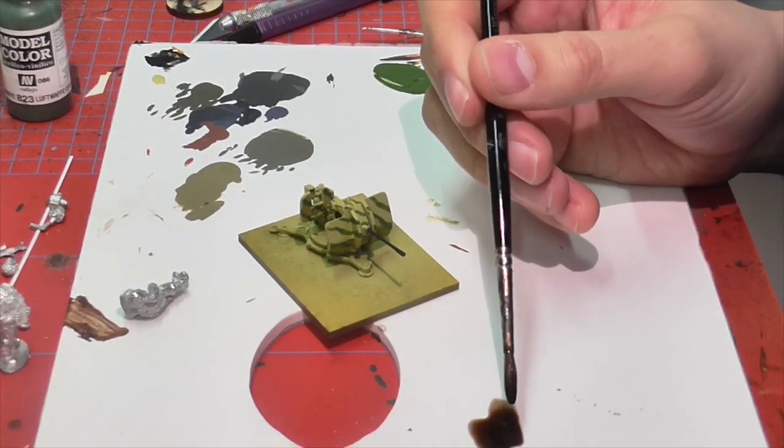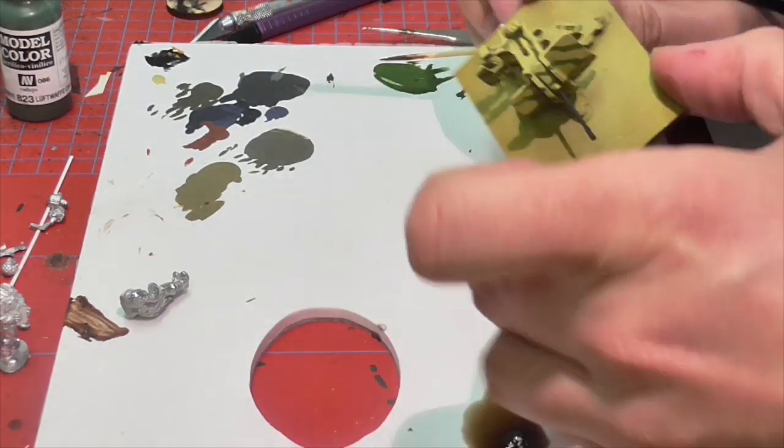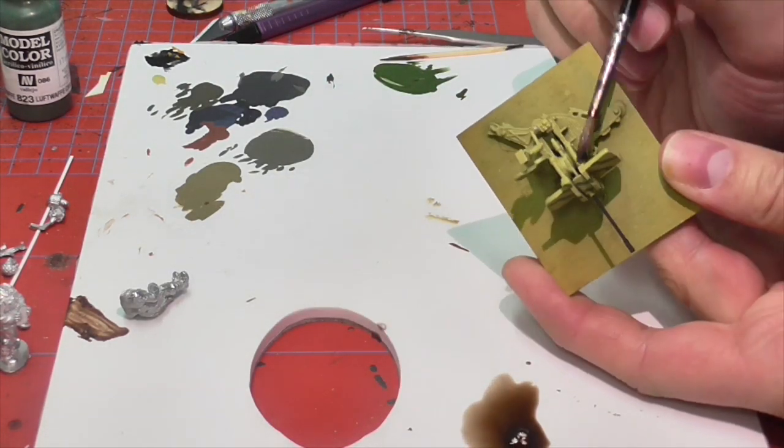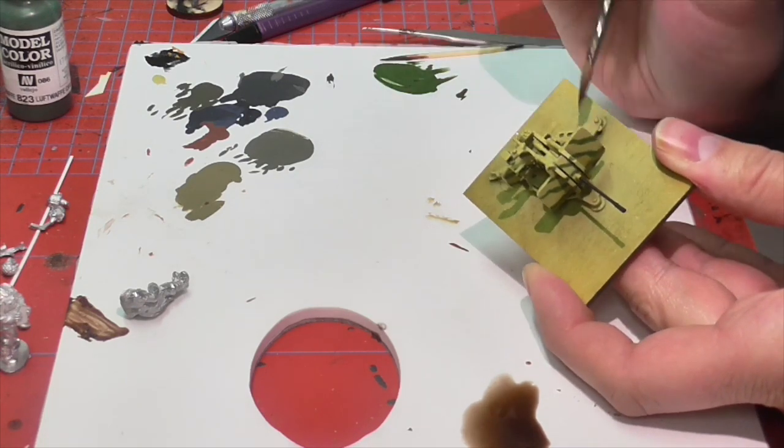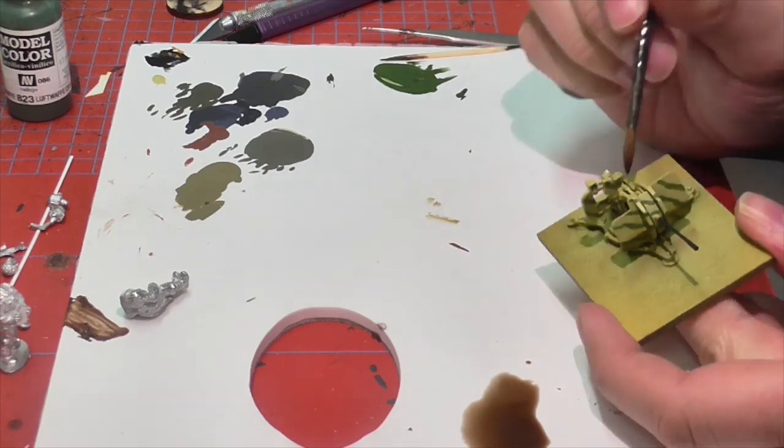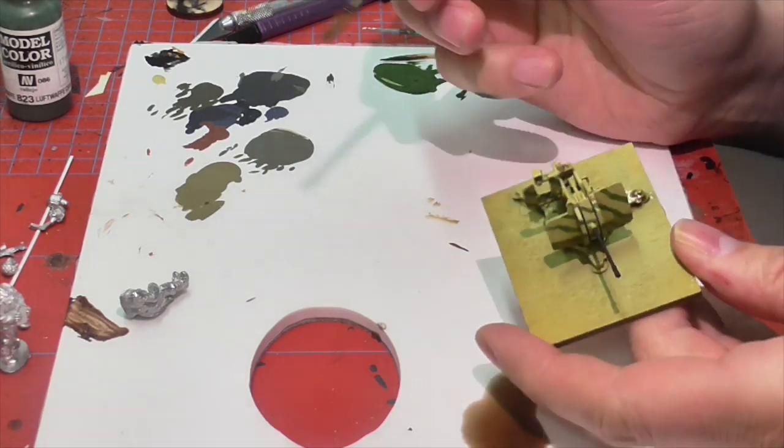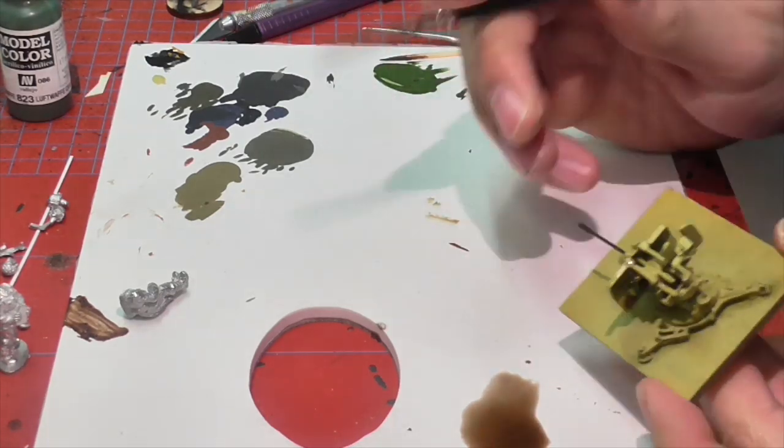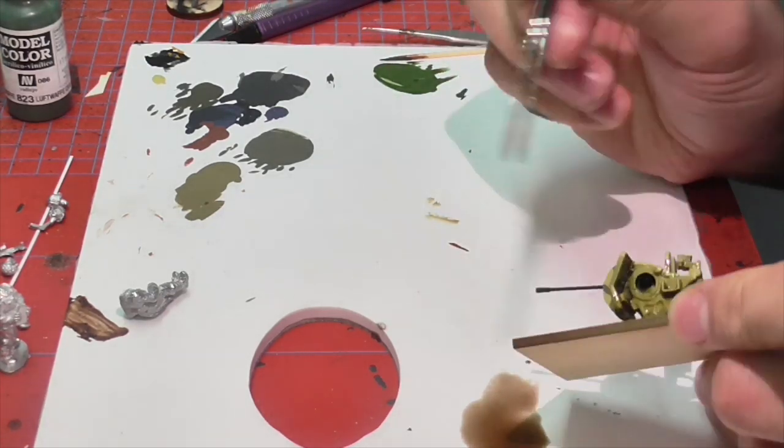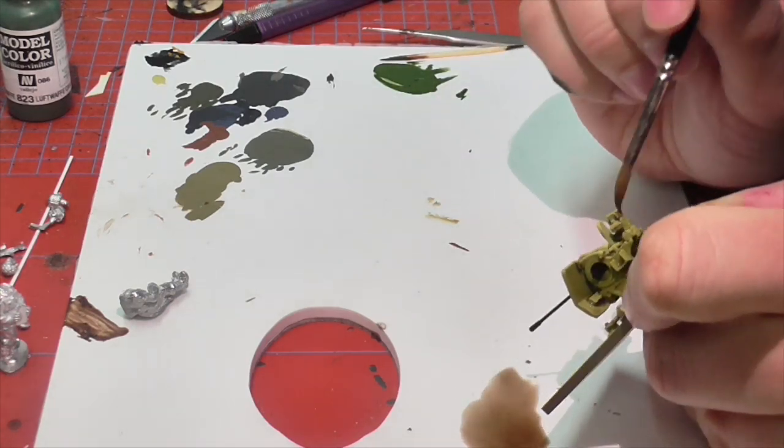Next, it was time to weather and shade the gun a little bit and this is just really best done with washes. So, Jasper is taking here some Agrax Earthshade from Citadel and he's thinned it down quite a bit with water because he doesn't want it to come off too heavy everywhere since this is just more of a general overall wash. But anyway, so he's got this thinned down Agrax and he's just really just going to glop it on pretty much everywhere on all parts of the gun.